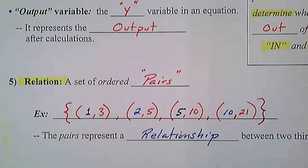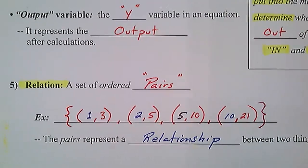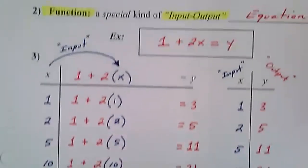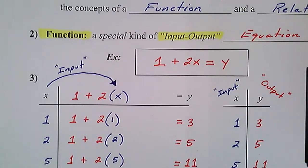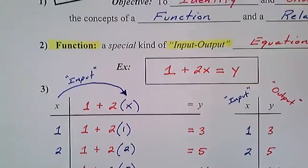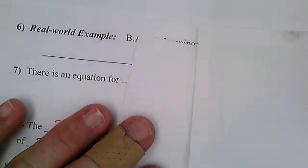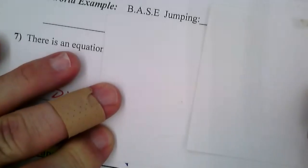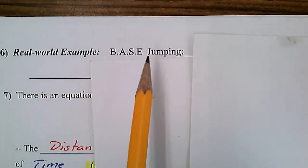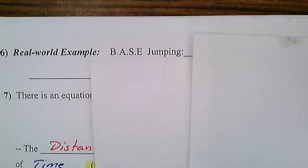What does this have to do with real life? Let's look at a real-life example of a function and why it's important. I'm curious if any of you know what base jumping is — this is our real world example. What does BASE jumping stand for?